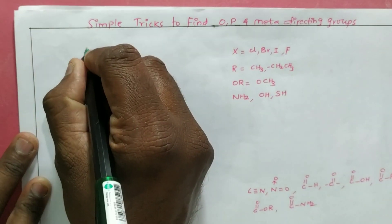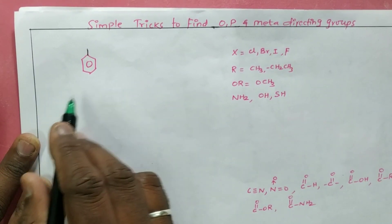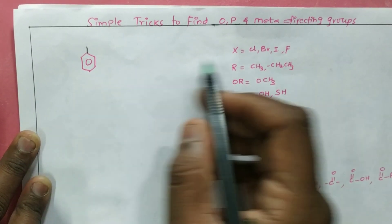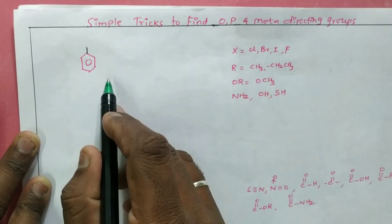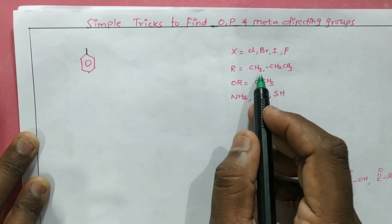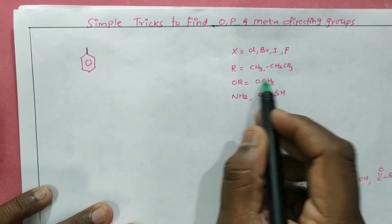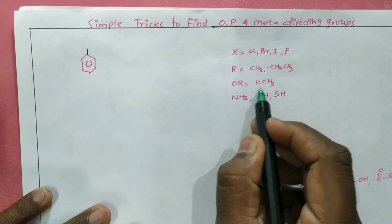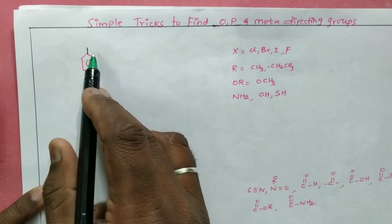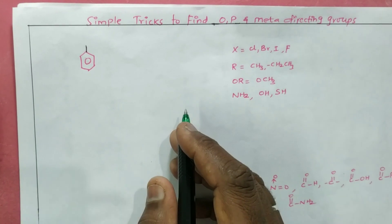In a benzene ring, if there is a single substituent, there is no problem naming it. For example, if chlorine is there it is chlorobenzene, bromine gives bromobenzene, CH3 gives toluene, OCH3 gives anisole, and NH2 gives aniline. We name it according to the group present.